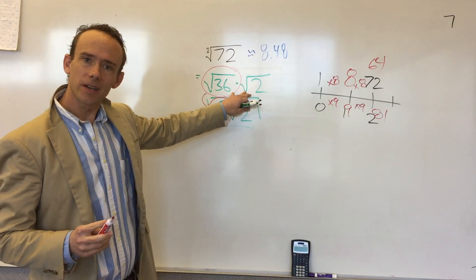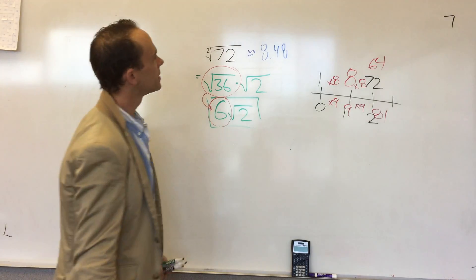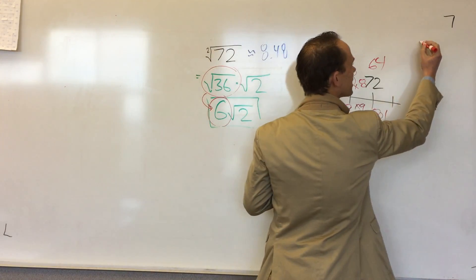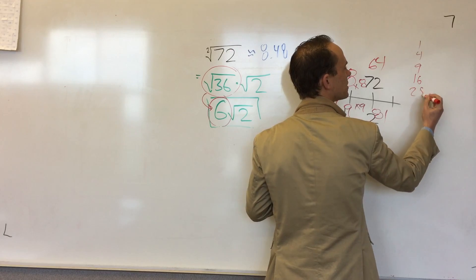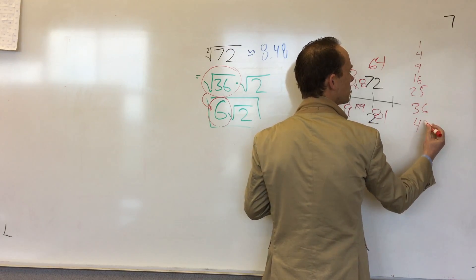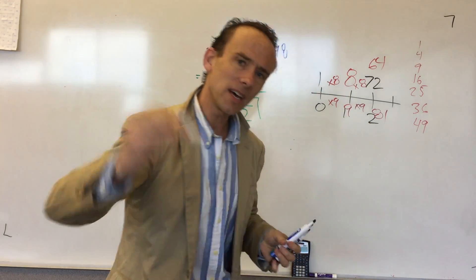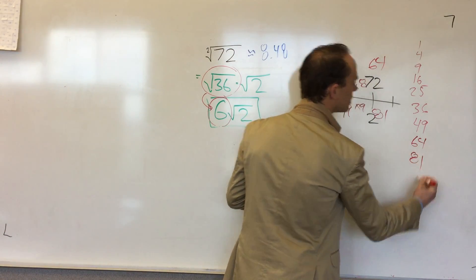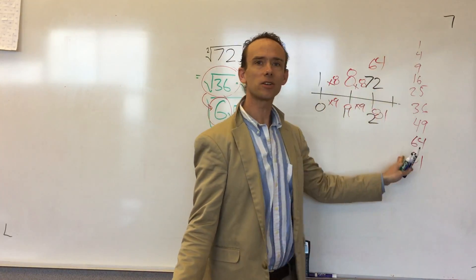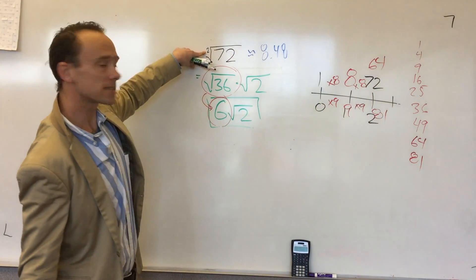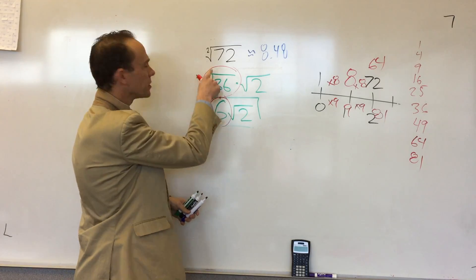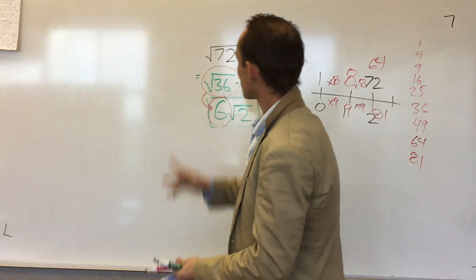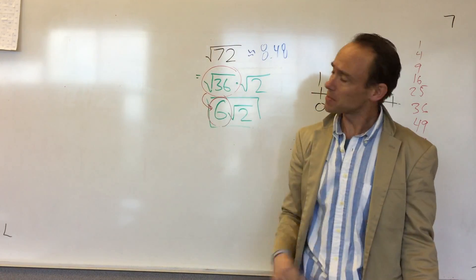Maybe you don't see that right away, so you should have a list of your perfect squares: 1, 4, 9, 16, 25, 36, 49 — that's 7 times 7 — 64, 81, keep going. These are the numbers you're looking for when it's a second root. I wrote 'second root' and notice we don't have to write the 2 — the 2 is implied. If it's a third root, we've got to start writing 3s, but the 2 is implied.